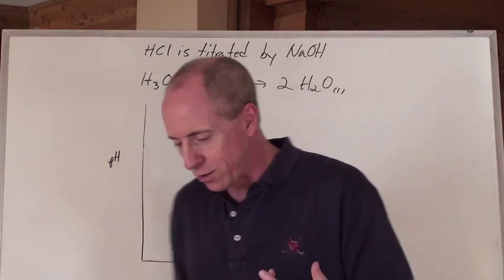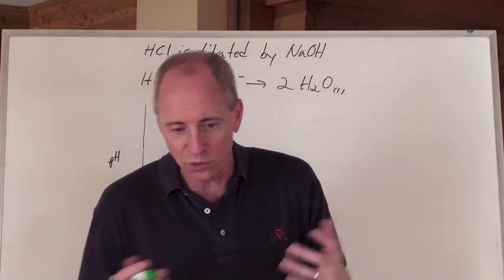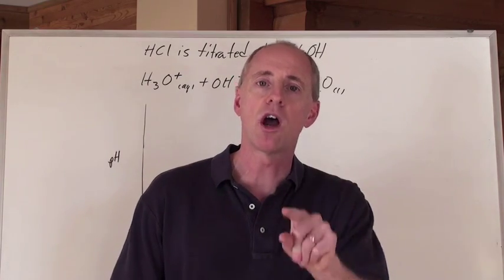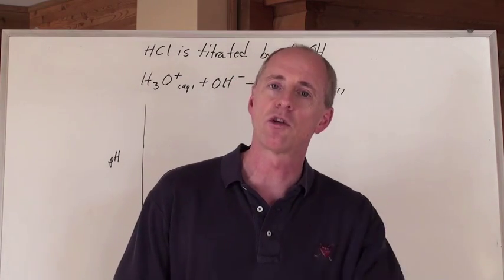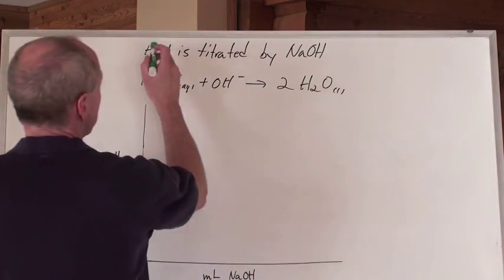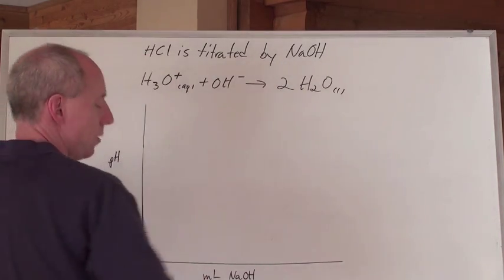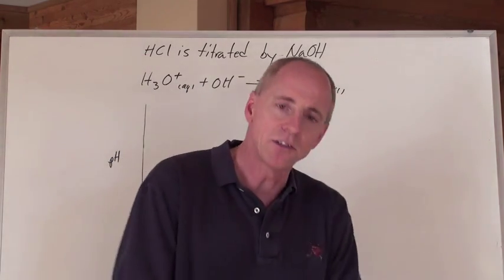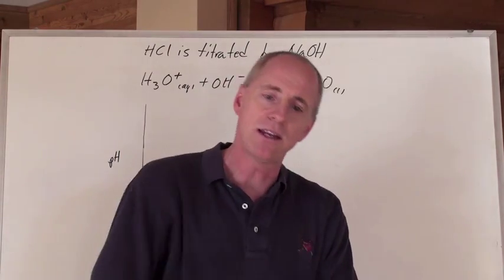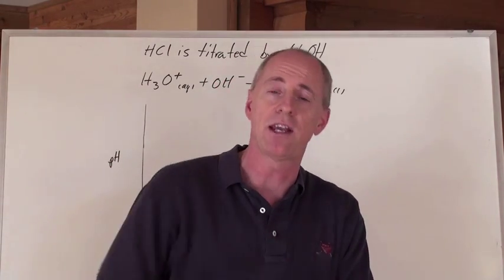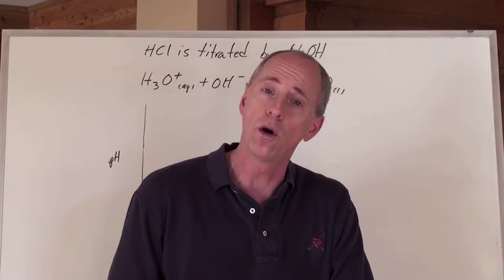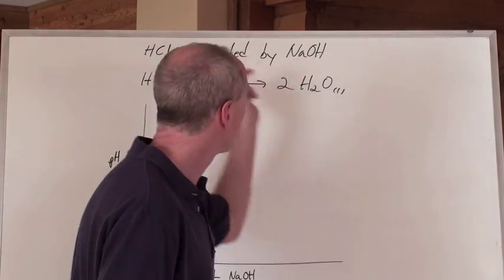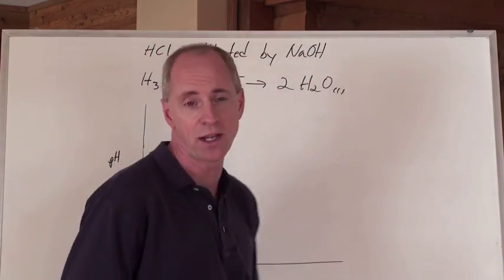Let's take the most standard type of titration curve — a titration involving a strong acid and a strong base. HCl is titrated by NaOH, meaning that the HCl is in the bottom flask and is titrated with the NaOH, or NaOH is titrated into HCl. That's another way of saying the same thing.